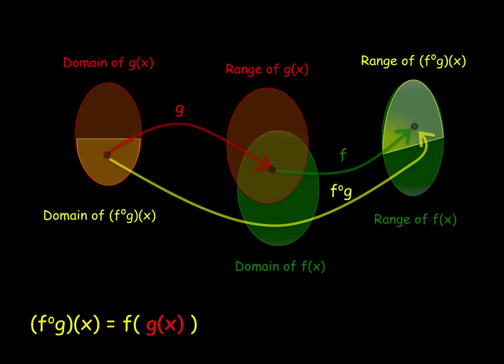The domain of G and the domain of the composition might be the same. The domain of the composition, however, could have less elements or be a proper subset of the domain of G. You cannot get more than you start with.